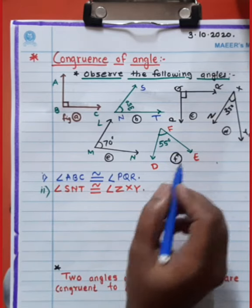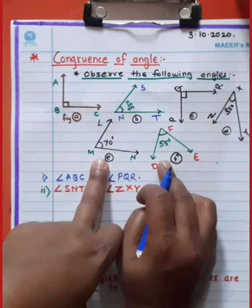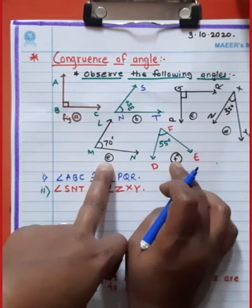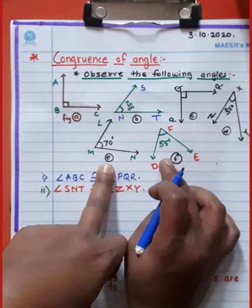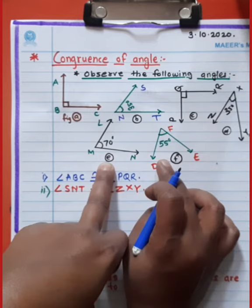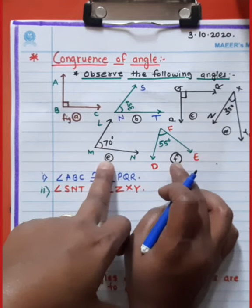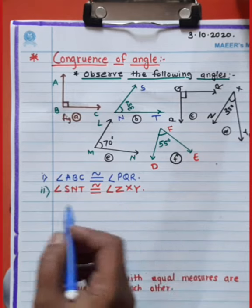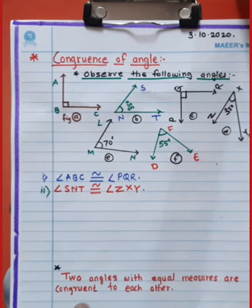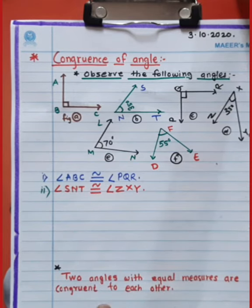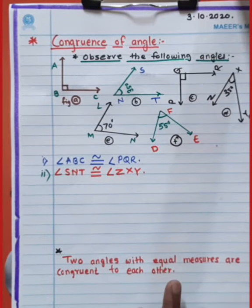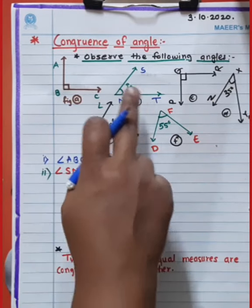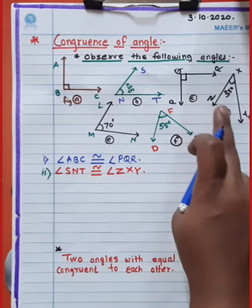Then 70 degrees and 55 degrees — these two angles have different measurements of angle, so they do not congruent to each other. It means angle ABC is congruent to angle PQR, and angle S and T is congruent to angle ZXY.